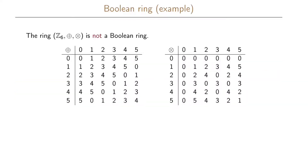Let us look at an example. We have the ring Z6, where the addition operation is defined as addition modulo 6 and the multiplication operation is defined as multiplication modulo 6. This is not a boolean ring. Looking at the multiplication operation element by element: 0 is idempotent because 0 times 0 is 0; 1 is idempotent because 1 times 1 is 1; but 2 is not idempotent because 2 times 2 is 4, not 2.